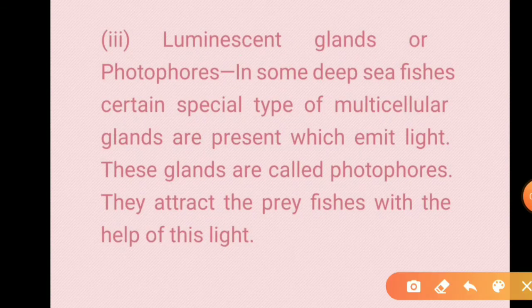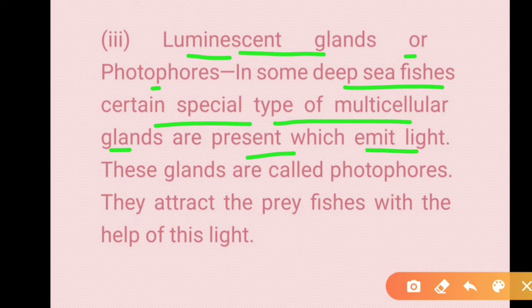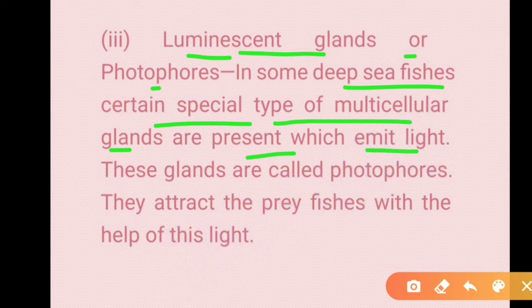Luminous glands are called photophores and are found in deep sea fishes. These are special types of multicellular glands which emit light. The word 'luminous' is related to light — like the Lumos spell in Harry Potter, which produces light.